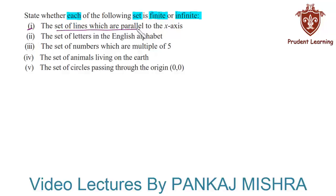The first set says the set of lines which are parallel to the x-axis. Now if you have a basic understanding of geometry, then you know that infinite number of lines can be drawn parallel to x-axis. Hence the given set is an infinite set since we can draw infinite number of lines parallel to x-axis.